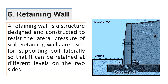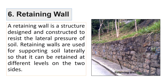The sixth type is retaining walls. Simply put, walls that support soil are known as retaining walls. As you can see in the image, this is a cross section of a wall supporting soil on one side. These are mostly used in sloped land such as mountainous regions, river banks, and so on.